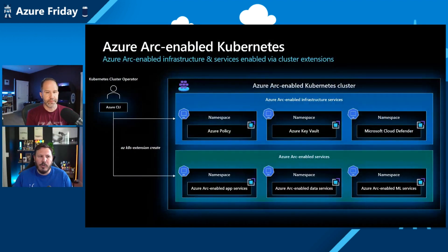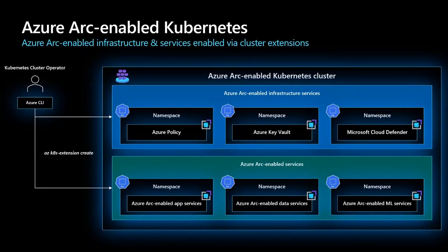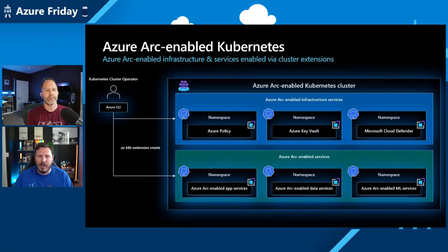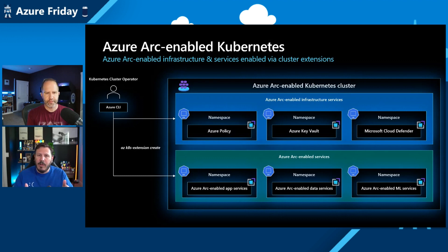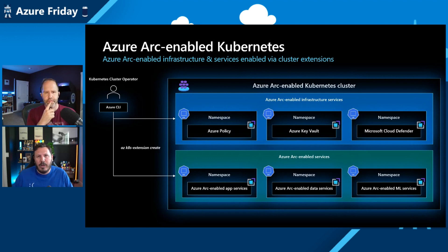So in the diagram I'm showing you, this is where the split between the two types of extensions starts. We have the Azure Arc enabled infrastructure services extensions — these are extensions basically built into the control plane: Azure Policy, Key Vault, Microsoft Defender. These are extensions you can think of as 'I should do this by default.' And the Azure Arc enabled services extensions is where you're starting to integrate other Azure services like data services, machine learning, and app services — like SQL Managed Instance. This is where the extension model comes to life.